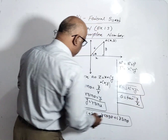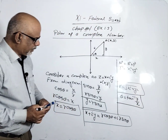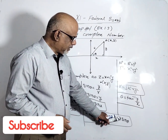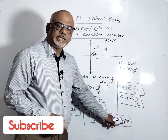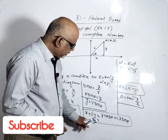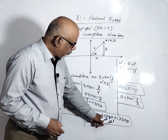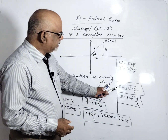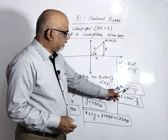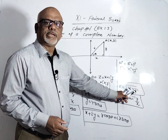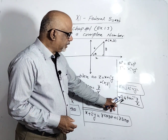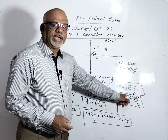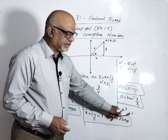So the polar form is r cos θ + i r sin θ, where r = √(x² + y²) and θ = tan⁻¹(y/x). This is the polar form of a complex number.